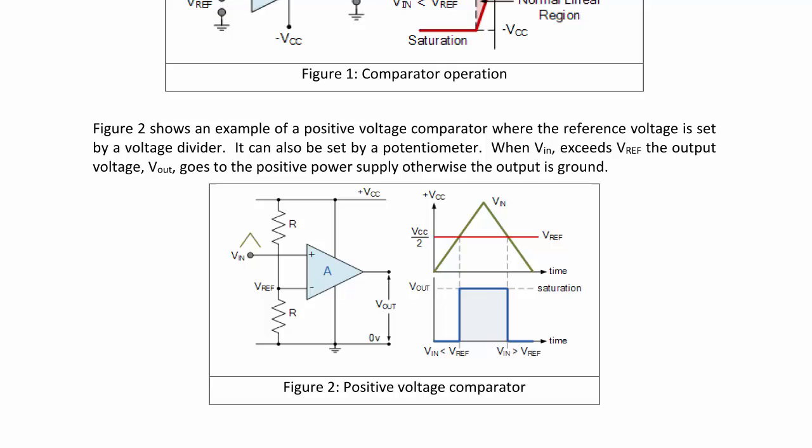Figure 2 shows an example of a positive voltage comparator where the reference voltage is set by a voltage divider. Note that this can also be set by a variable resistor or potentiometer. When Vn exceeds Vref, the output voltage Vout goes to the positive power supply. Otherwise, the output goes to ground, because the negative power supply is set to ground.